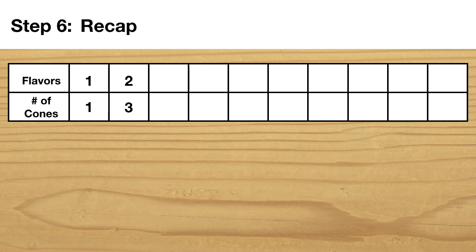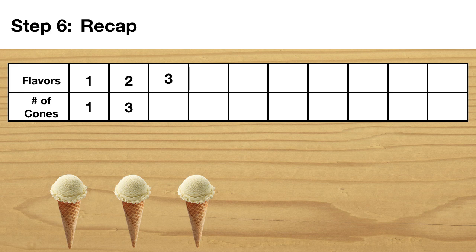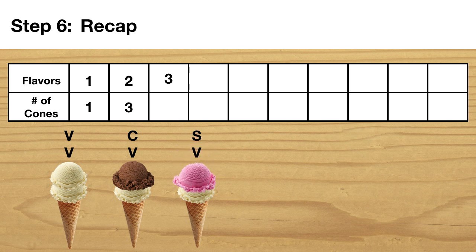Then I thought about what would happen with three flavors. Now there were going to be more combinations, so I needed to stay organized. I started by thinking of all the possible cones with vanilla on the bottom. I could have vanilla vanilla, vanilla chocolate, or vanilla strawberry. That's all I could do with vanilla on the bottom.